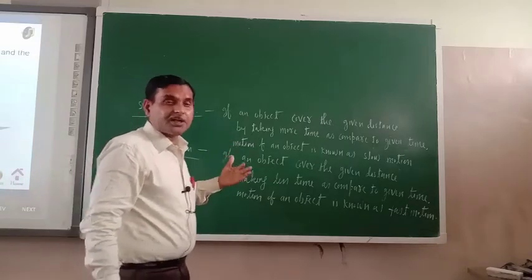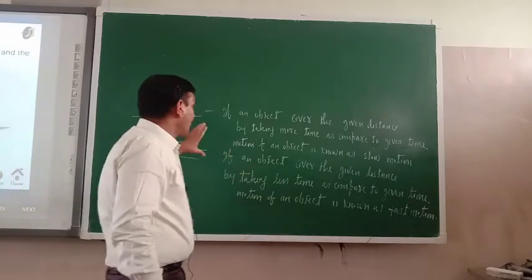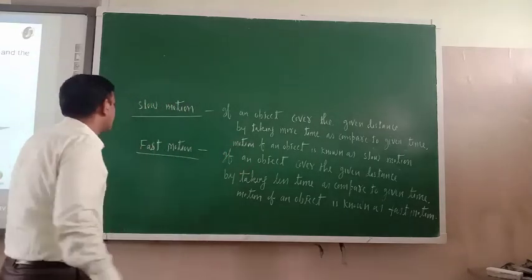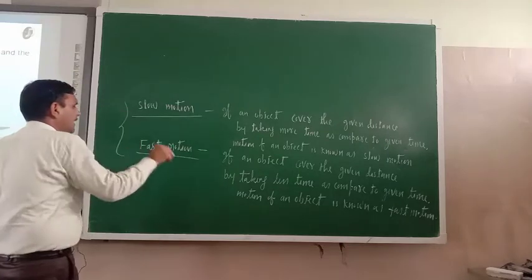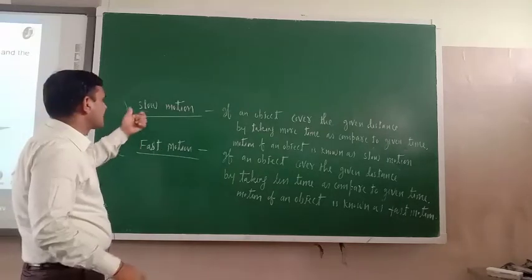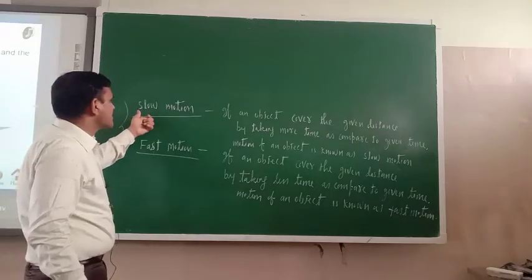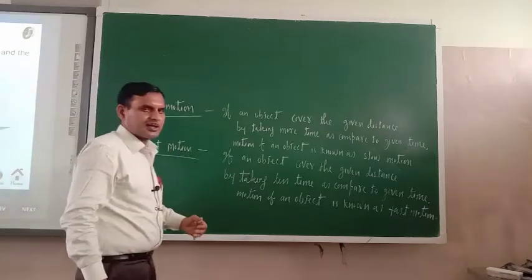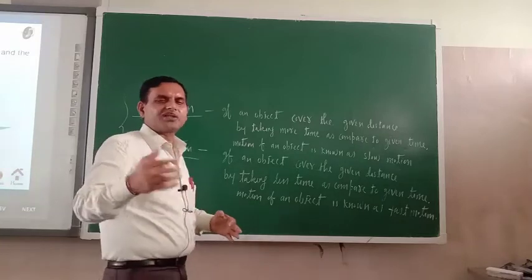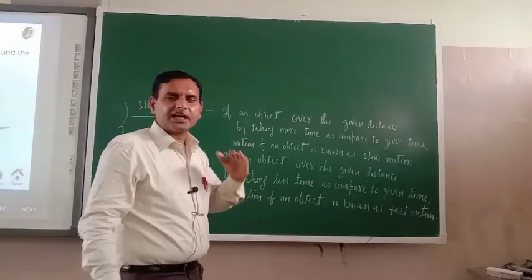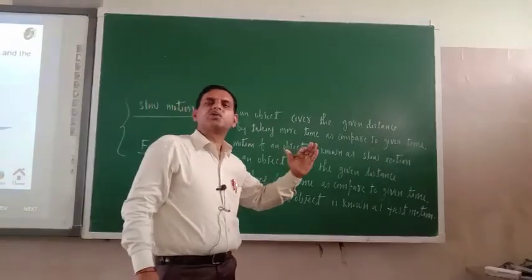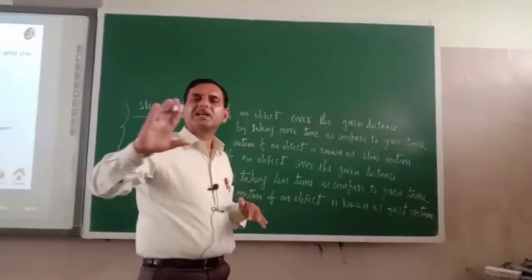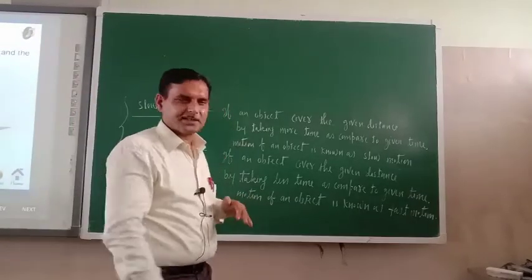Now one more thing — these two terms are often used: slow motion and fast motion. How can you say that an object is slow? How can you say that an object is fast?